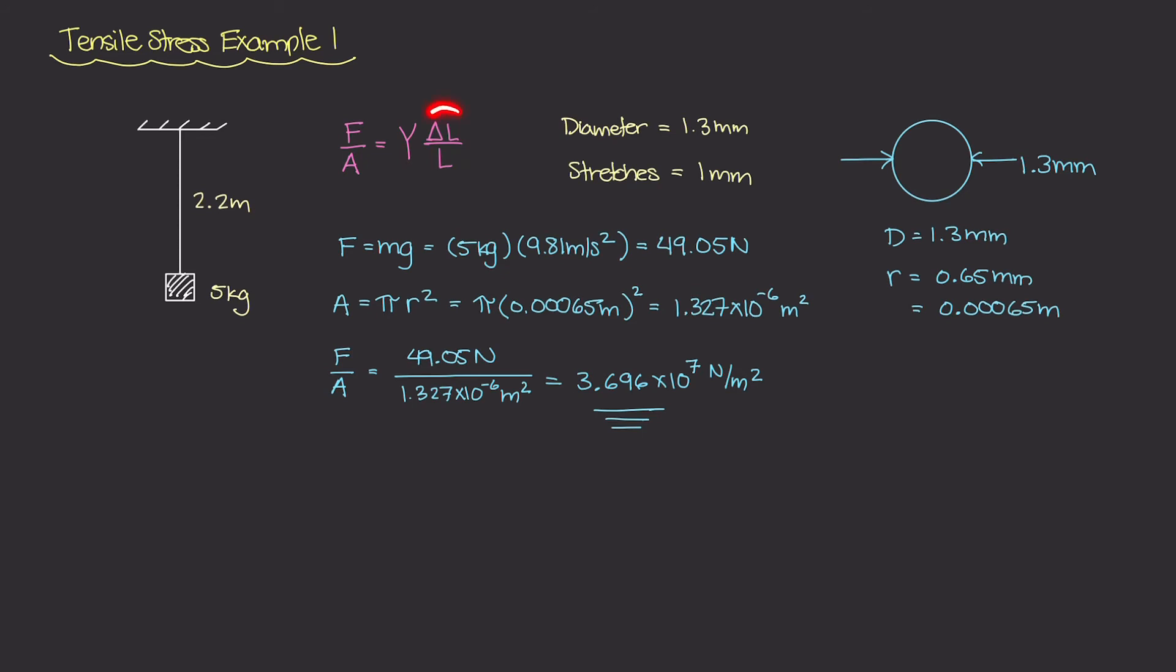And remember strain is unitless. It's really a ratio between how much the wire has stretched over its initial length. So both units are in units of length and if you take length over length, the units cancel out and you're just left with a ratio.